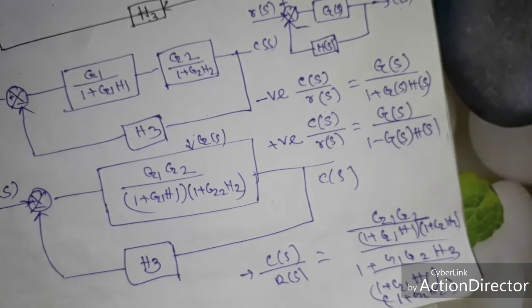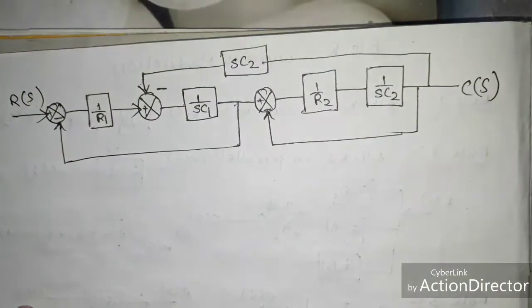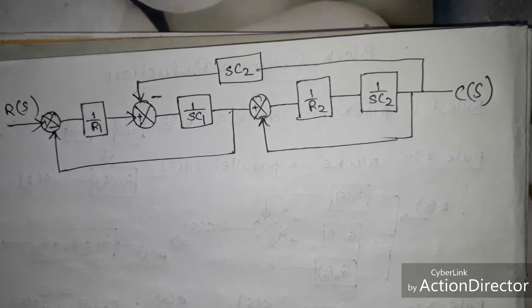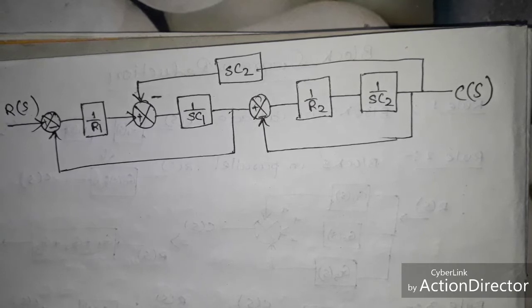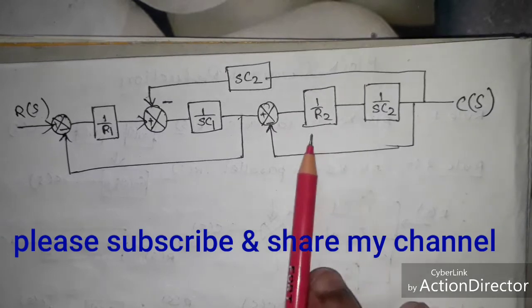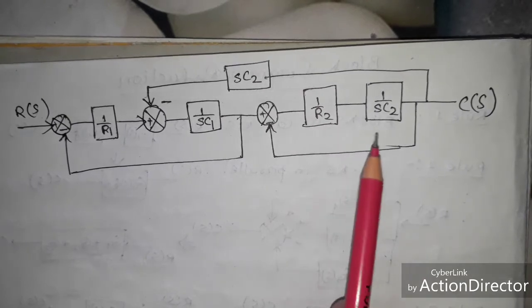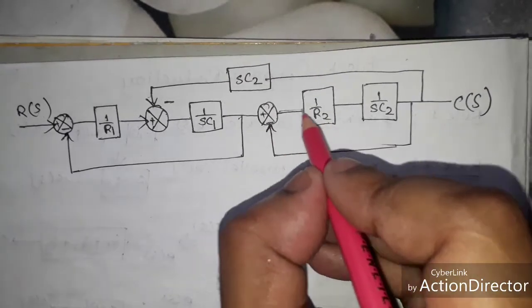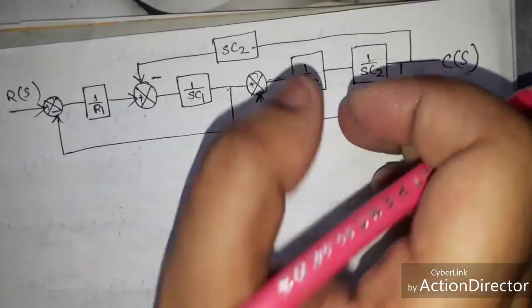Now we consider another example. By using block diagram reduction technique, we have to find the overall transfer function of the system. First, by looking at the block diagram, you have to consider which portion can be easily converted. Here you can see two blocks in cascade, so that will be multiplication: (1/R2) × (1/s) × C2. After that, you can see there is a loop, so you can easily find the transfer function of that block.